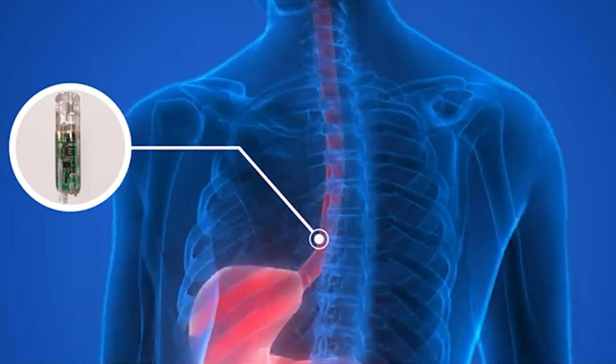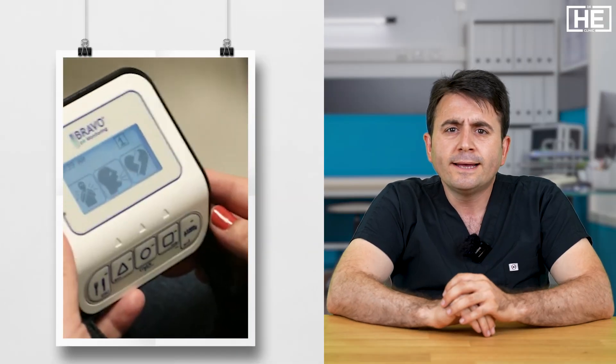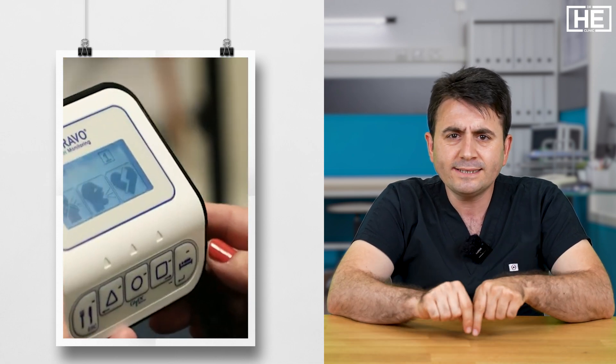A tube will be located in the lower part of the esophagus, and sometimes it can be a capsule — there are two different techniques. Both the tube and the capsule have a connection with a device, either a cable connection or a Wi-Fi connection. By this connection, during 24 hours, the device measures the pH level of the patient's lower esophagus. The next day the results are evaluated, and according to the results of the endoscopy and pH monitoring test, the decision for surgery will be made easily.